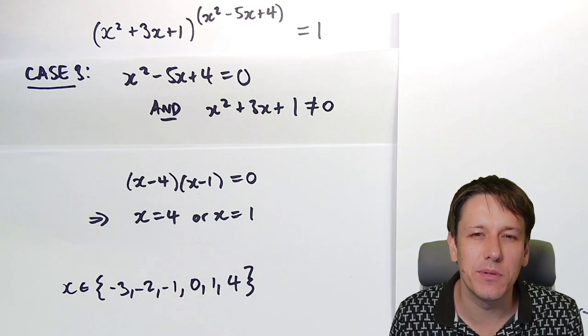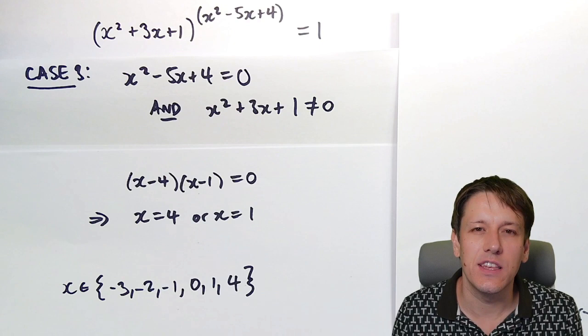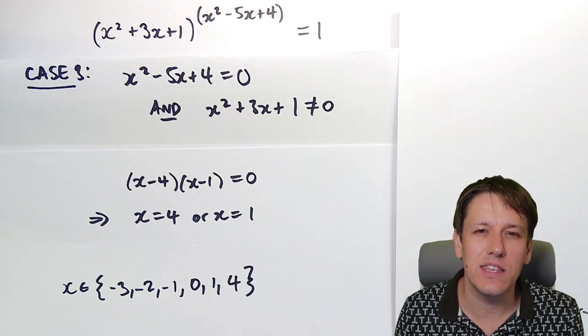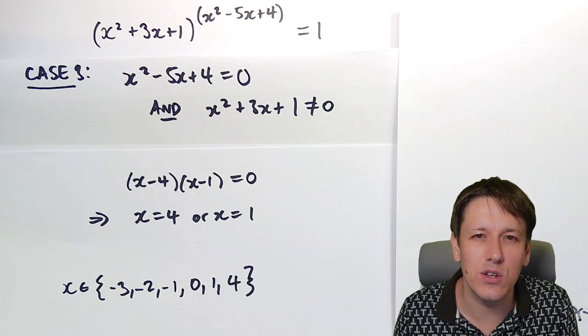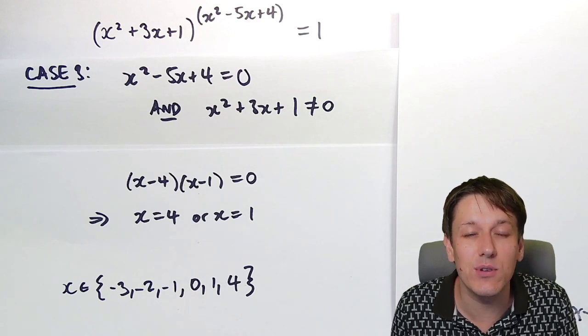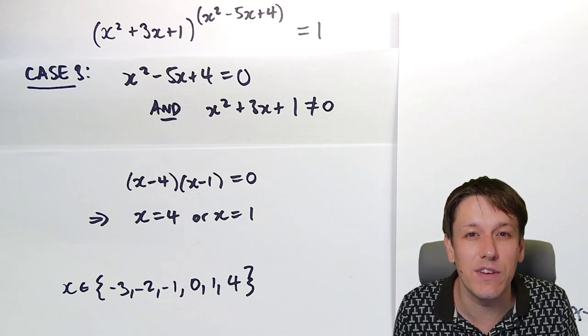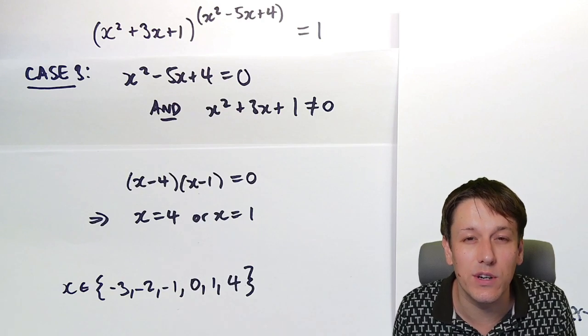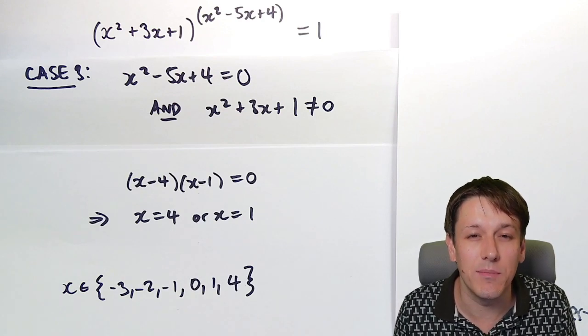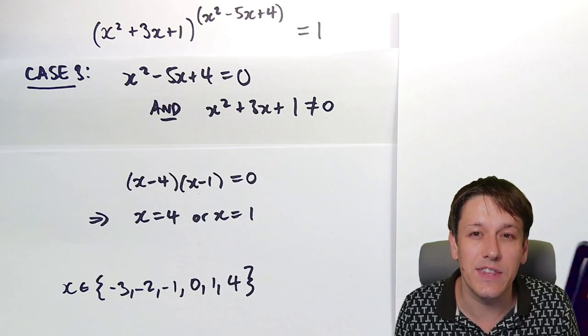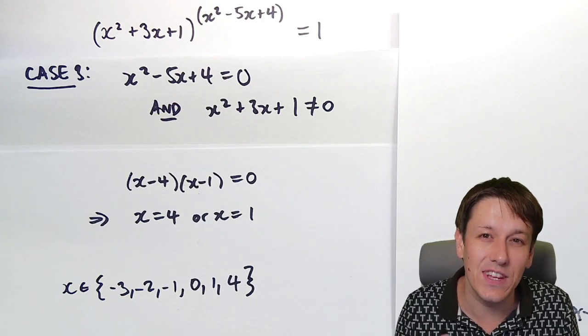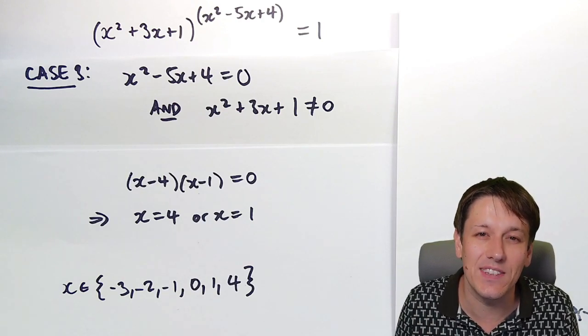If you like math problems like this, you might be interested in the question of how many zeros are on the end of 100 factorial, or even 1000 factorial, or many other numbers — I've answered that question in another video, so hopefully I'll see you there.